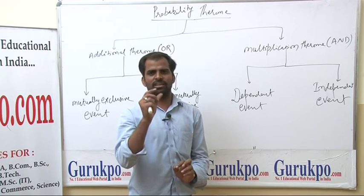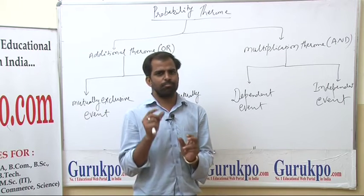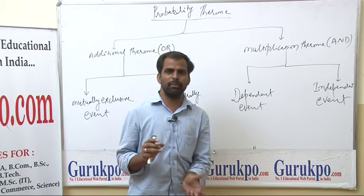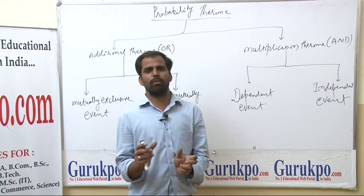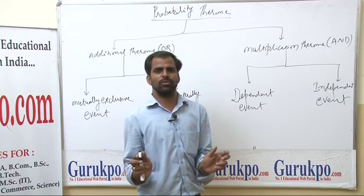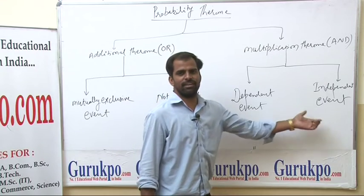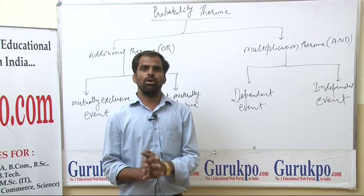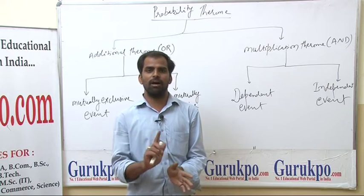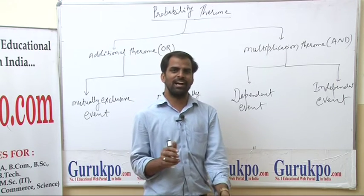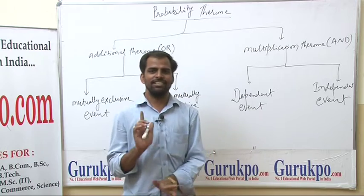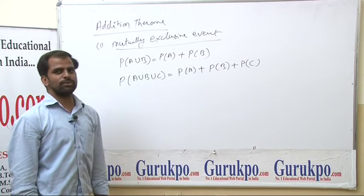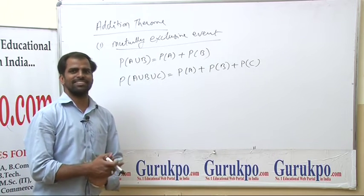Independent event example: ek coin aur ek dice (paasa) ek saath uchhalay — paase pe number aur sikke pe head aane ki probability kya hai? Dono alag-alag hain, dono ek doosre ko effect nahi karte, isliye wo independent events hain. Jabki dependent ke liye: baarish aegi toh pani bharega — baarish independent factor hai, aur pani aana dependent factor hai.